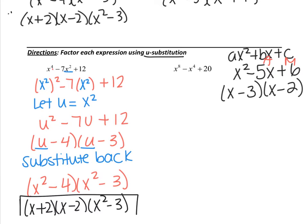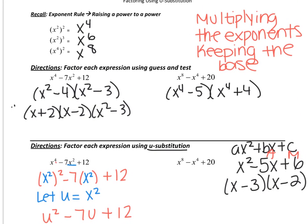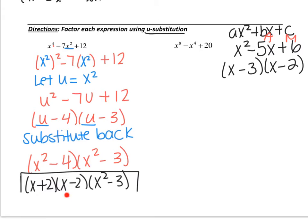I know this seems like a confusing way to do the same thing as before, but it has a purpose. I'm never going to make you factor these types this way, but try to understand the purpose. We basically want to rewrite the trinomial in ax squared plus bx plus c form. So I wrote x to the fourth as x squared squared, let u equal x squared, rewrote it using u's, factored it with u's, then substituted x squared back in and finished simplifying.